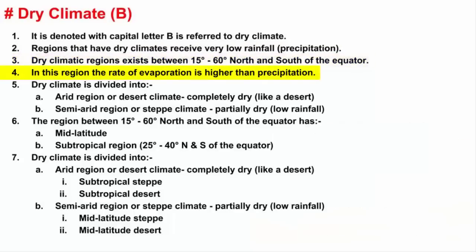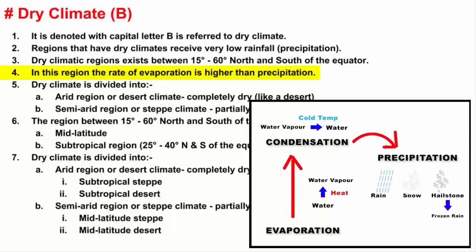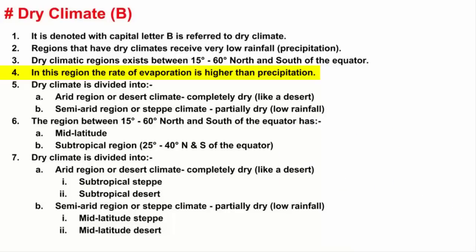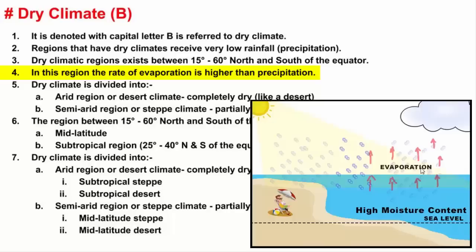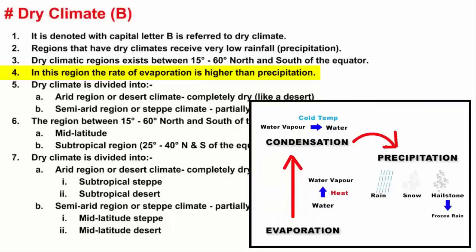Another aspect of dry climatic regions is that evaporation is high. Evaporation is the transformation of water molecules into water vapor with the help of the sun's energy. If evaporation is greater, then moisture content in the air will also be high, because evaporation creates water vapor, and water vapor in the air is basically moisture. Usually, if a region has high evaporation, it leads to cloud formation due to condensation, and that leads to rainfall.